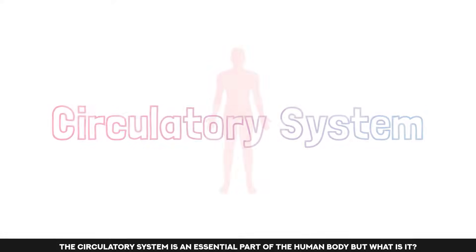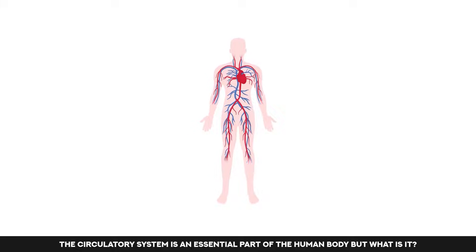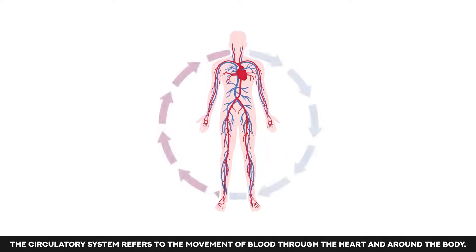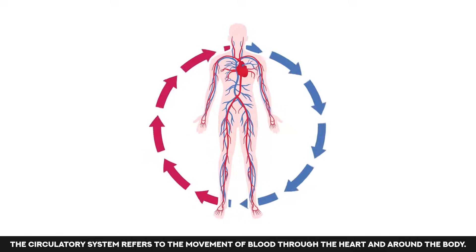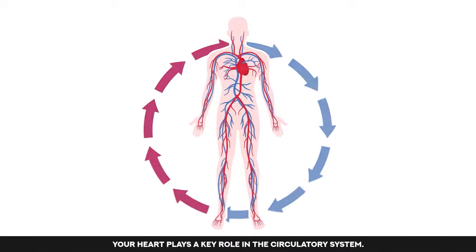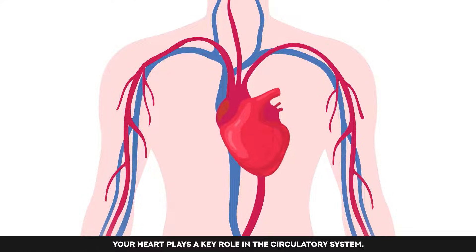The circulatory system. The circulatory system is an essential part of the human body, but what is it? The circulatory system refers to the movement of blood through the heart and around the body. Your heart plays a key role in the circulatory system.